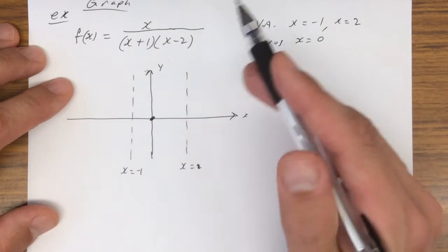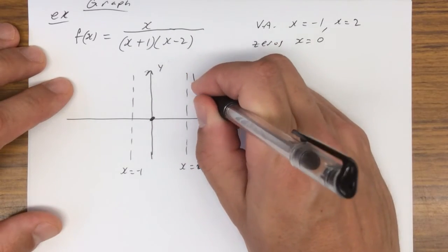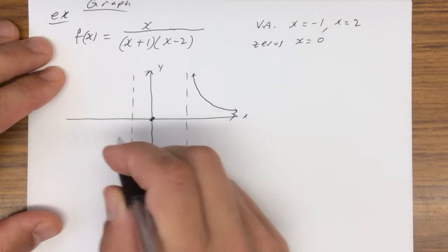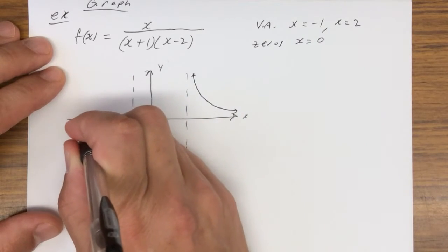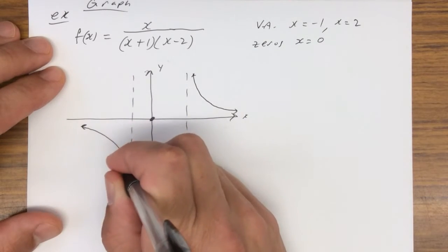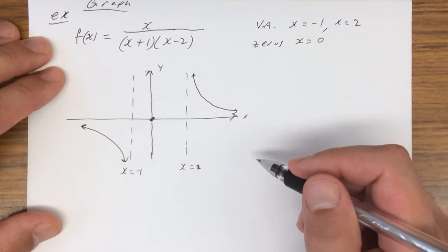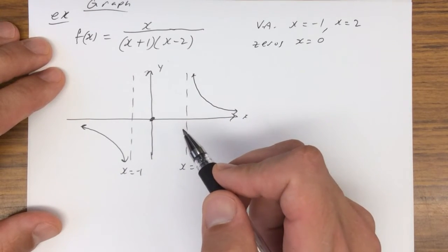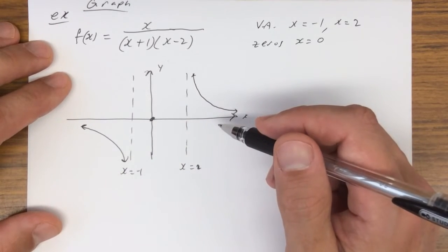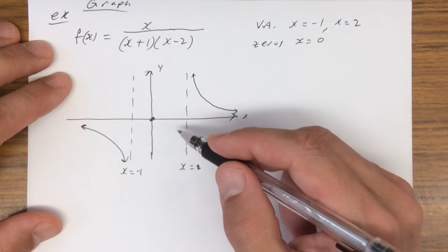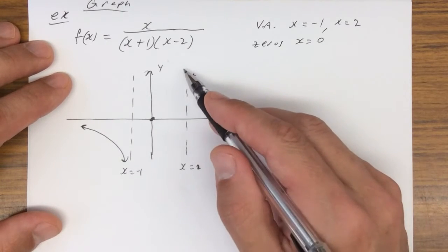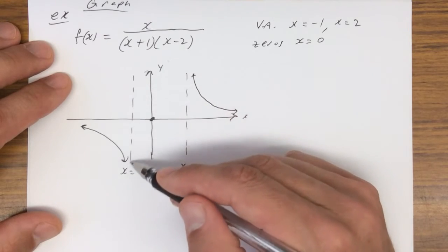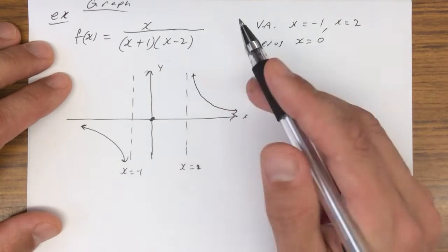Because this looks like 1 over x, not negative 1 over x, the end behaviors are going to head down to the x-axis on both ends. In the middle it's going to hit the zero point. Now how do we know what it's really going to look like — is it going to come down, hit this point, and go back up, or go through that point and continue back down?